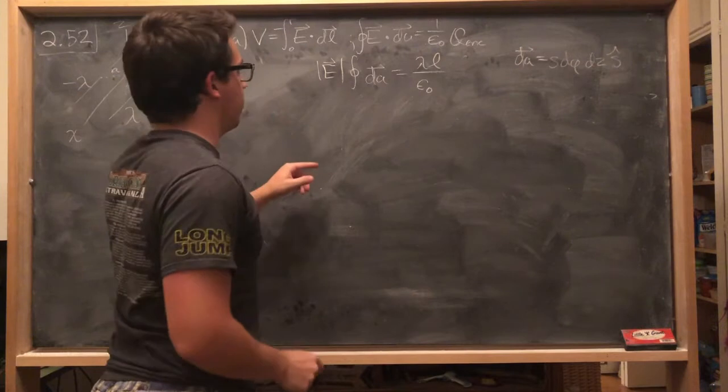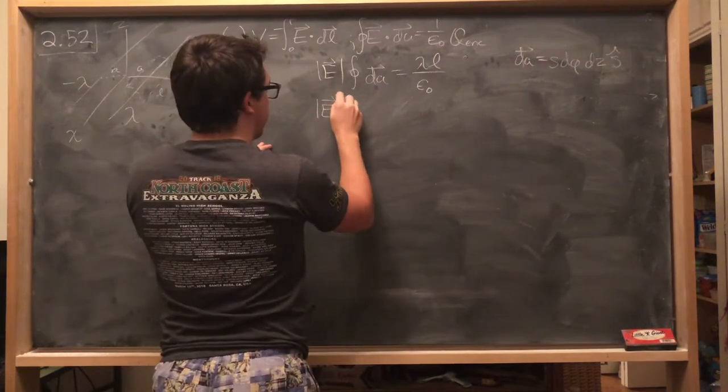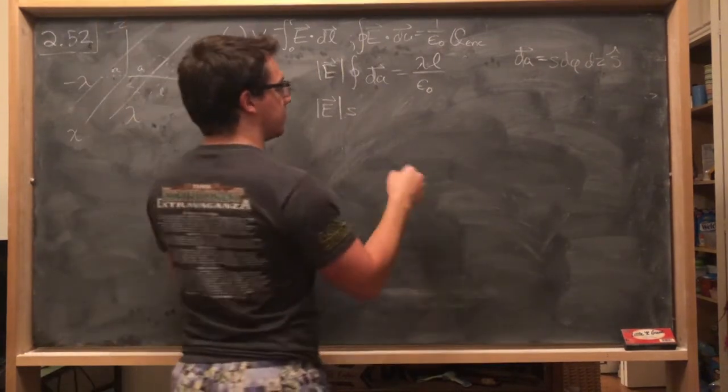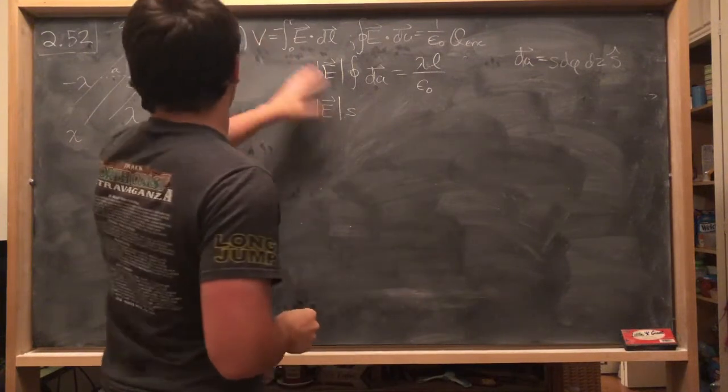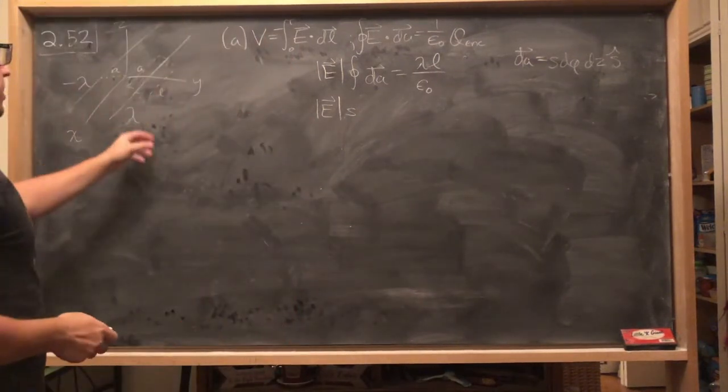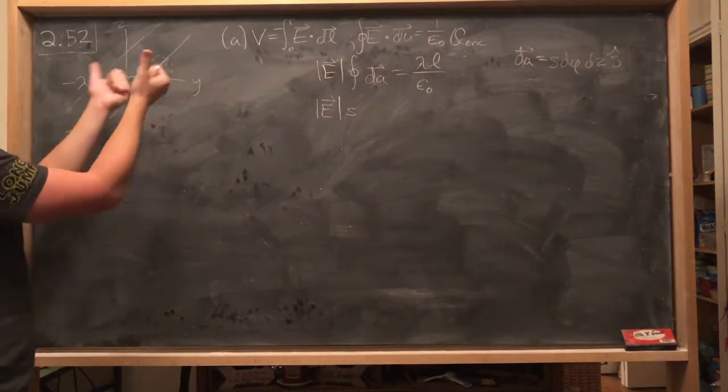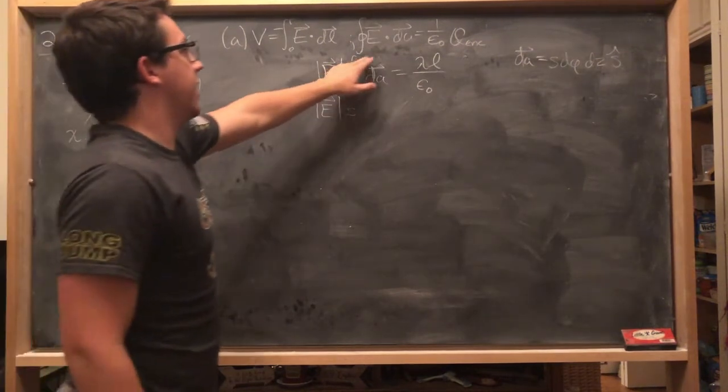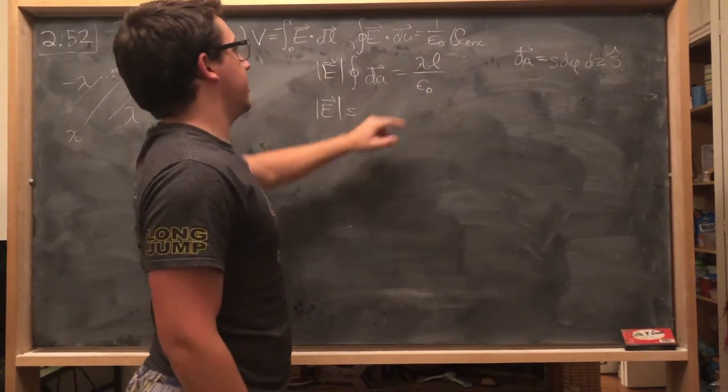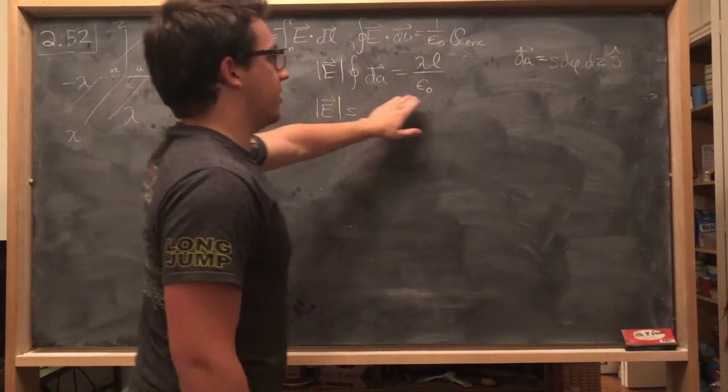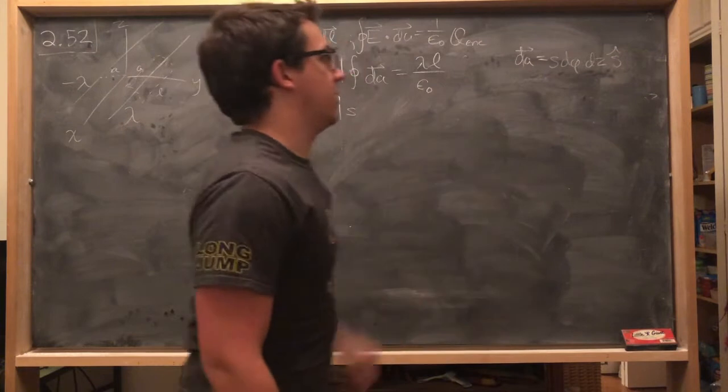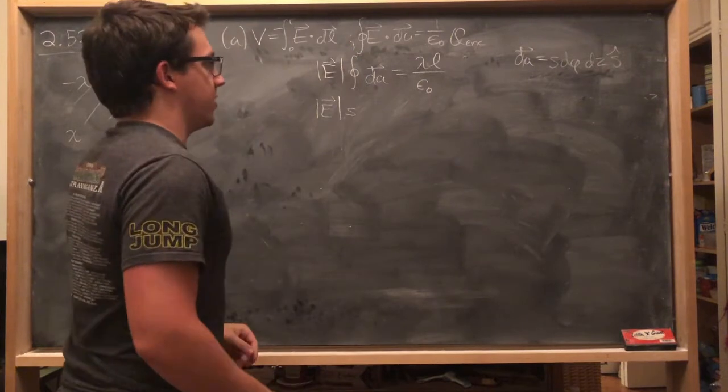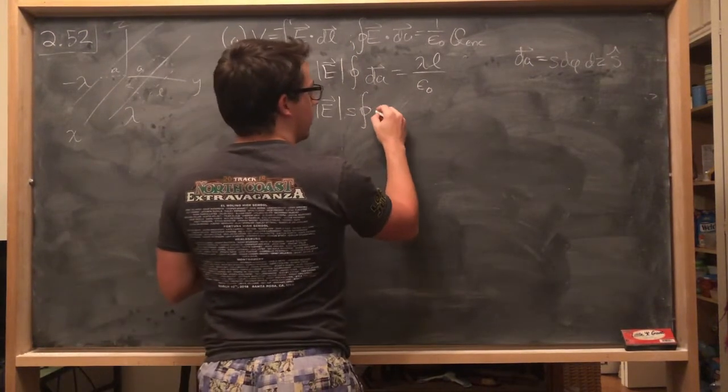So we would have E out, we'd have whatever our S is, and then since we expect symmetrically the electric field to point out radially, which in this case would be the S-hat direction from this wire, then that's why we were saying that the electric field dotted with this DA, we can just pull out the magnitude and DA just take off this S-hat, because the components would be in the same direction for the electric field and this DA.